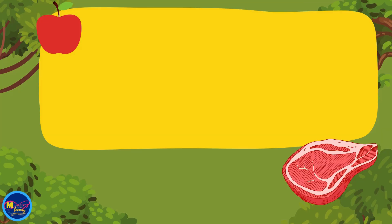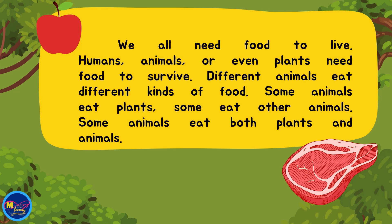We all need food to live. Humans, animals, or even plants need food to survive. Different animals eat different kinds of food. Some animals eat plants, some eat other animals, and some animals eat both plants and animals.